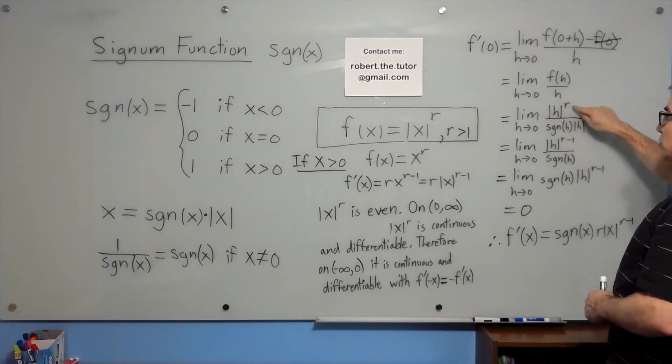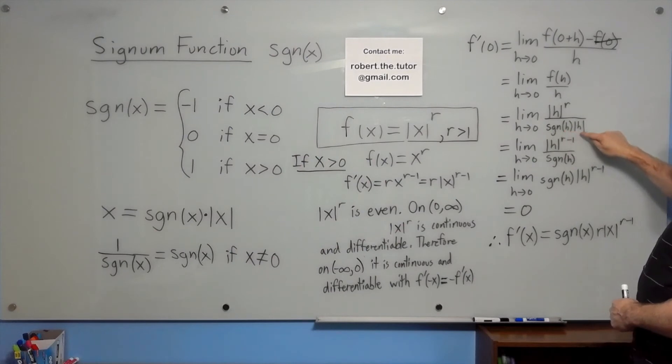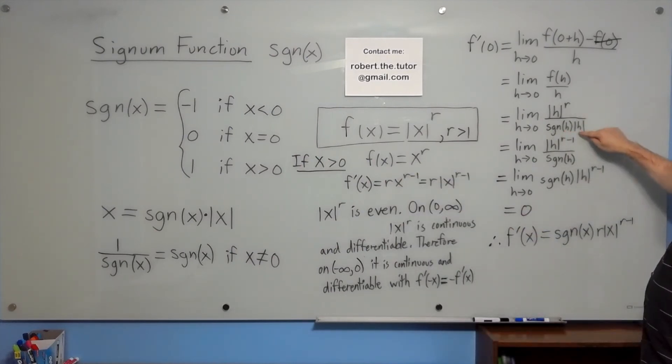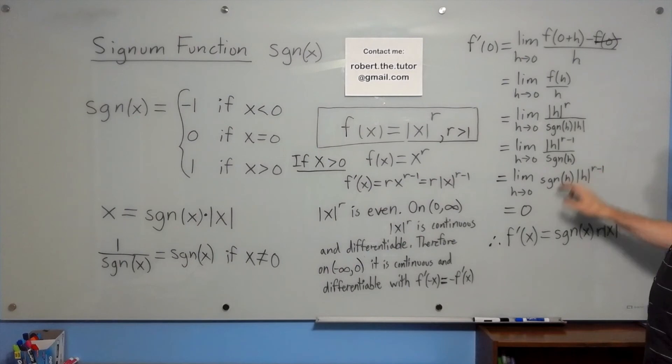f of h is absolute value of h to the r, and h I'll replace with signum h times absolute value of h, like we can do. Then we can cancel an absolute value of h. We're dividing by signum, but since we're taking the limit, we're not at zero, so we can make it multiply by signum. And finally, we let h go to zero, and we get zero.